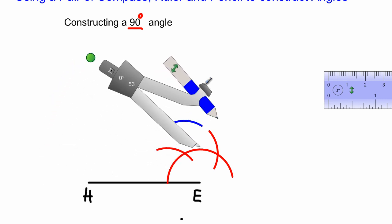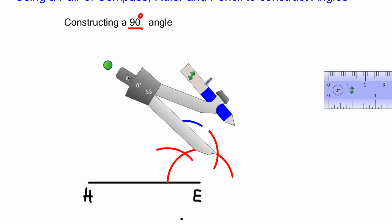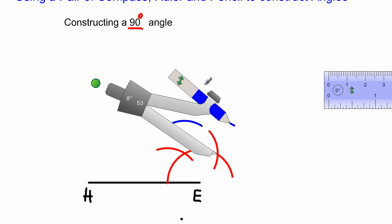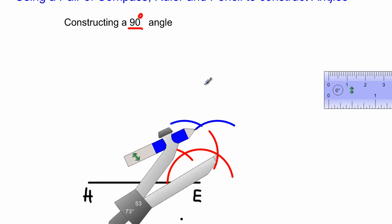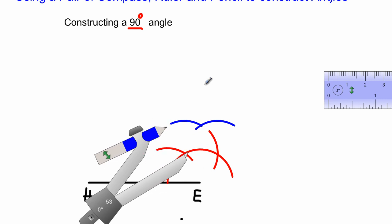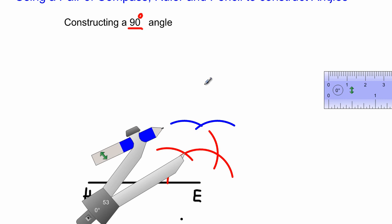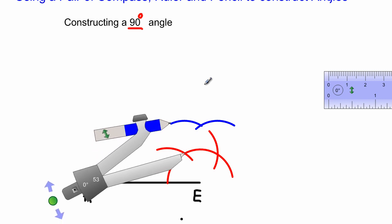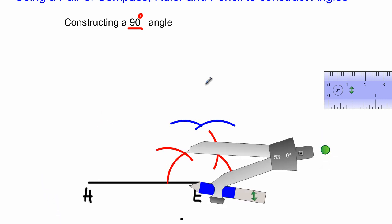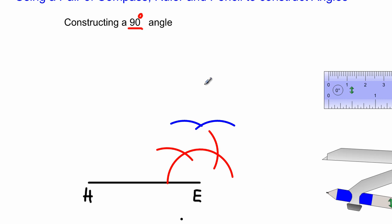Then I'm going to take it and place it here at that intersection, because I'm cutting this 60 degree into two equal parts, and I'm going to swing another arc right there. These two arcs have just intersected. I have an intersection right there. I'll be using my ruler to draw a straight line from the point E through the point of intersection, and there I would have my 90 degree.